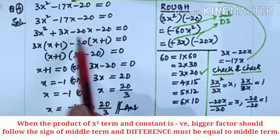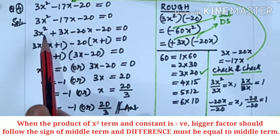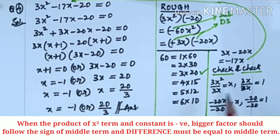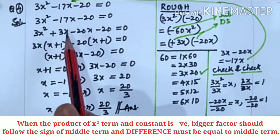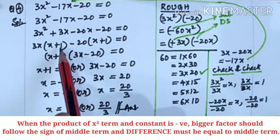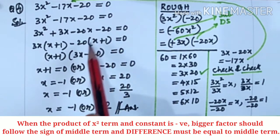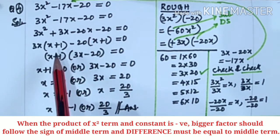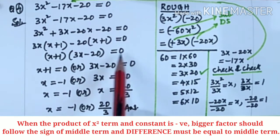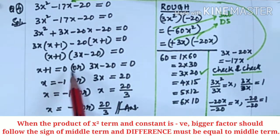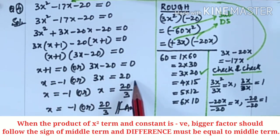3x² + 3x - 20x - 20 = 0. 3x² ÷ 3x is x; 3x ÷ 3x is 1. Minus 20x ÷ (-20) is x; minus 20 ÷ (-20) is 1. Equal to 0. These two are same. So (x + 1)(3x - 20) = 0. Either x + 1 = 0 or 3x - 20 = 0. x = -1 or 3x = 20, so x = 20/3. Answer: x = -1 or 20/3.